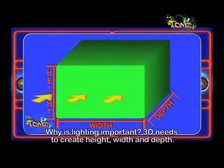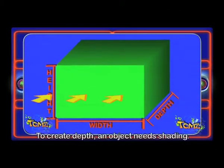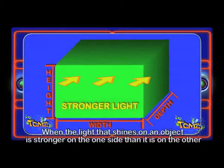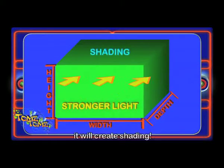3D needs to create height, width, and depth. To create depth, an object needs shading. When light hits one side more than the other, it creates shading.